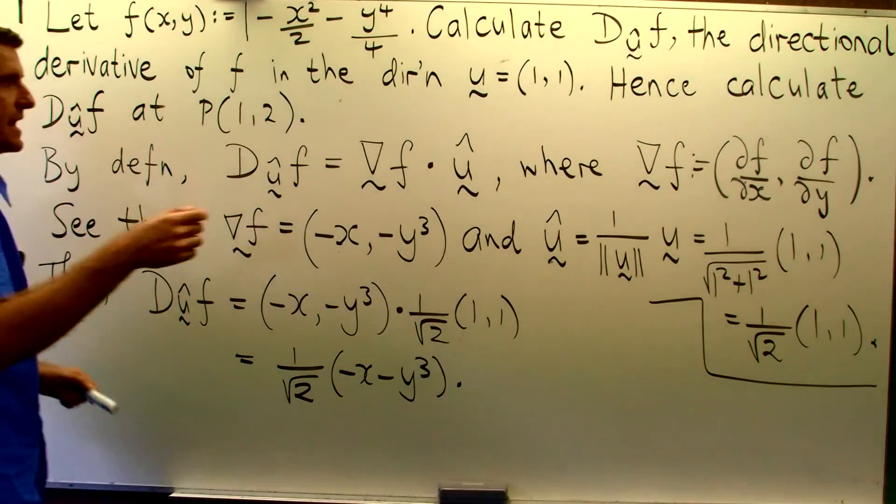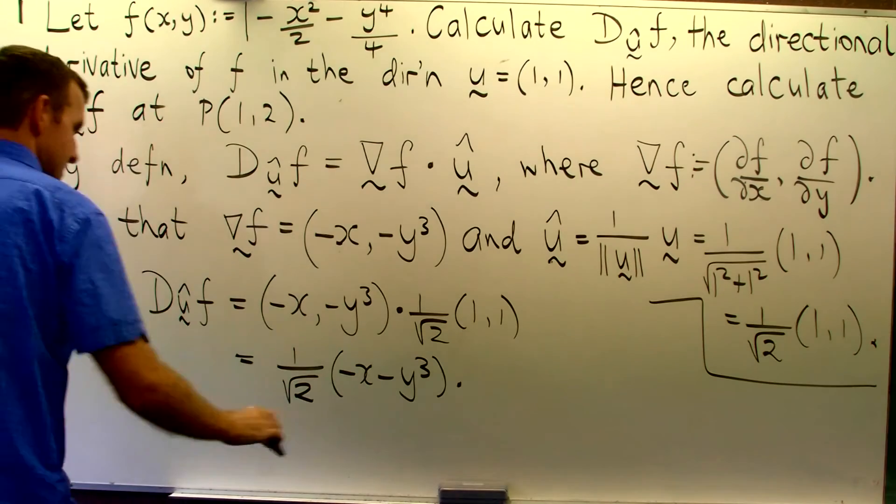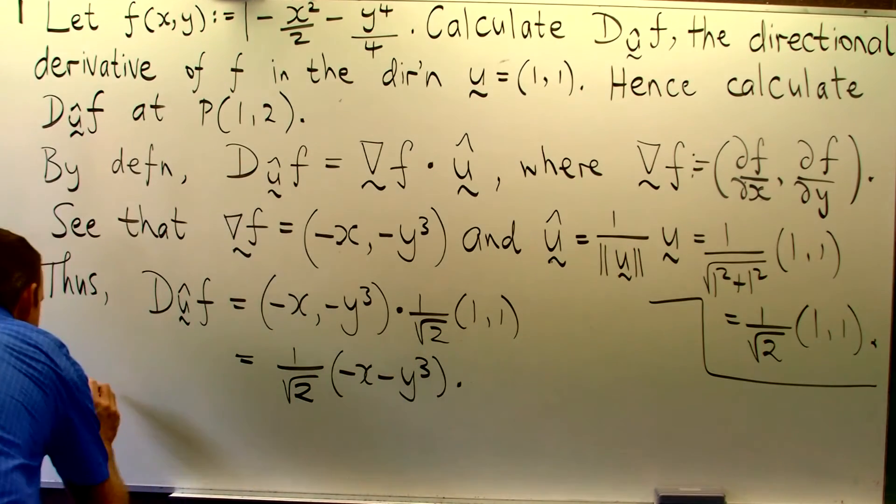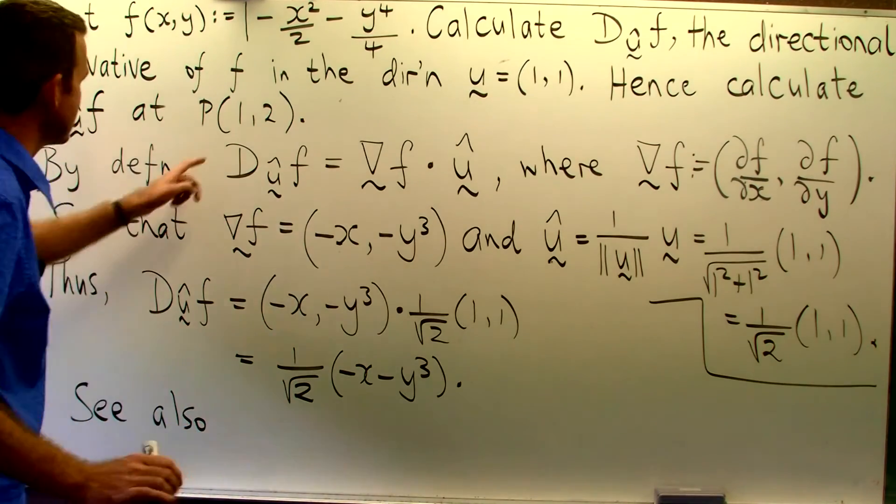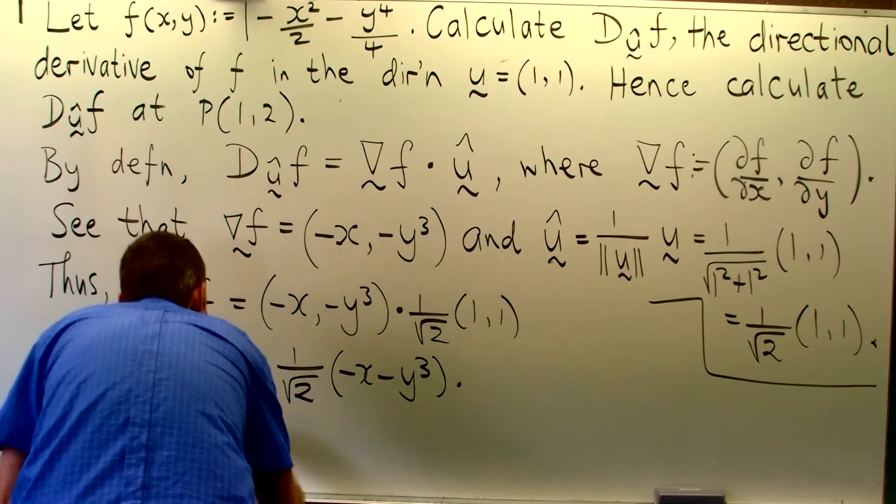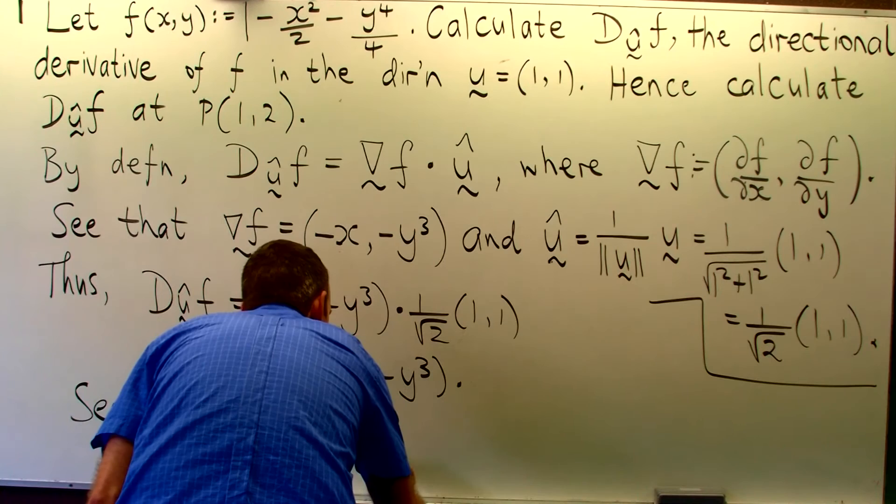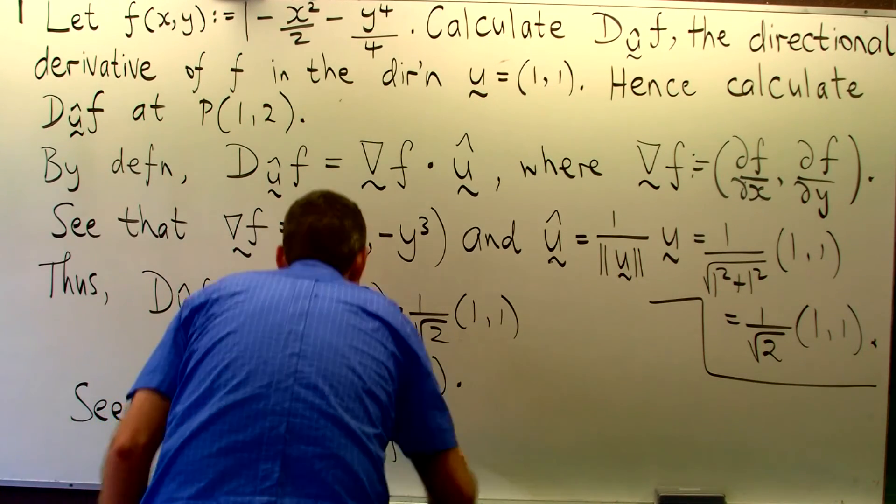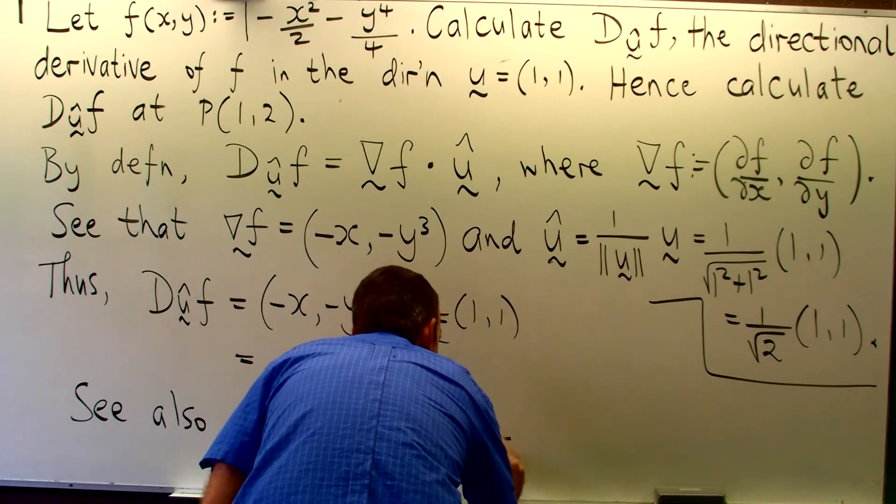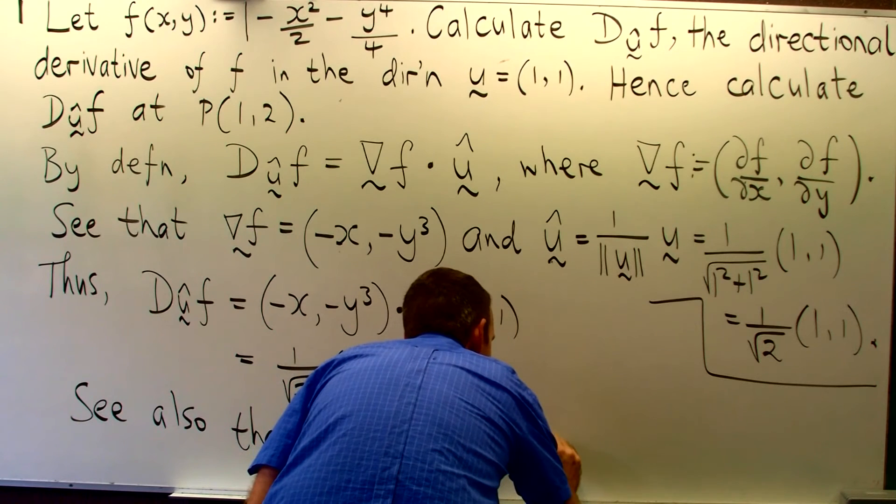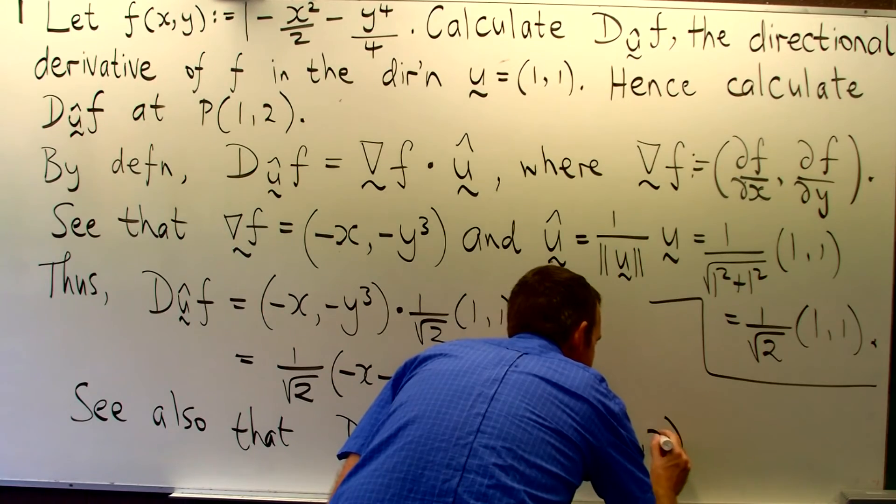Okay? Alright, so now we're asked to calculate the directional derivative of f in the direction u at this particular point. So all we do is we substitute in x equals 1, y equals 2 in here. And we'll get something like minus 9 on root 2 at the point p.